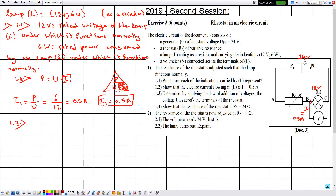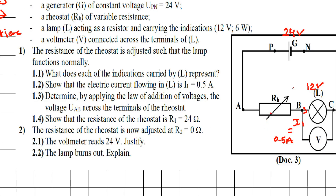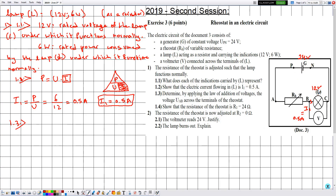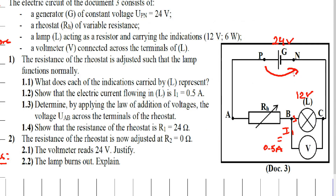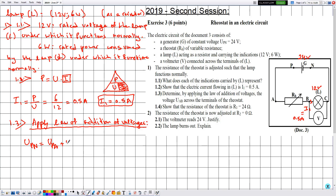In part 1.3, we must determine by applying the law of addition of voltages the voltage UAB across the rheostat. We know the voltage of the battery and the voltage of the lamp, so we can find the voltage across the rheostat. Applying the law of addition of voltages: on the left we write UPN, and on the right we write the voltages across each component from point P to N — UPA + UAB + UBC + UCN.